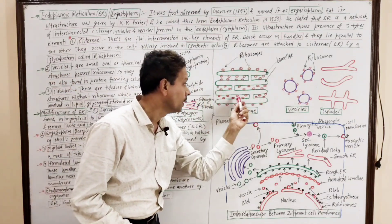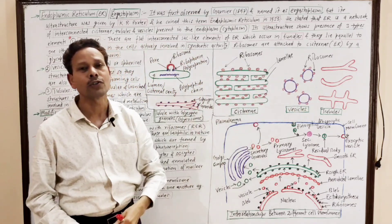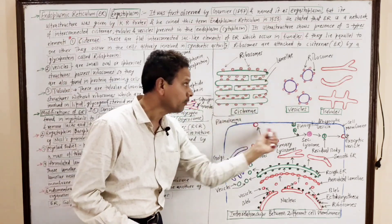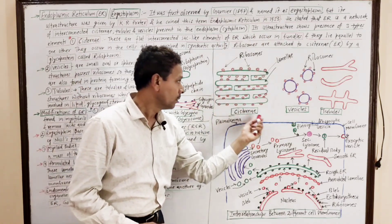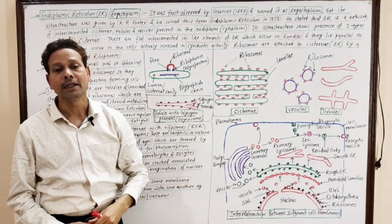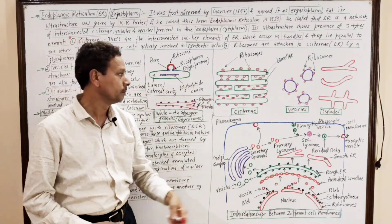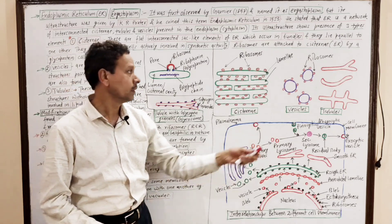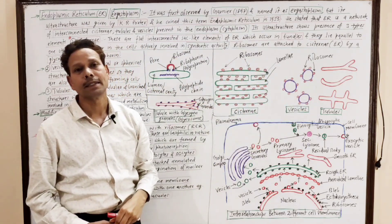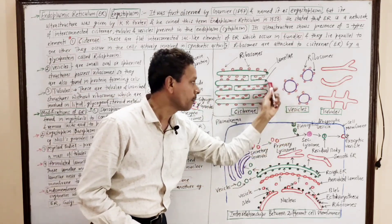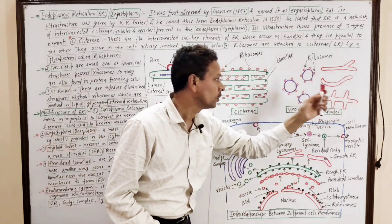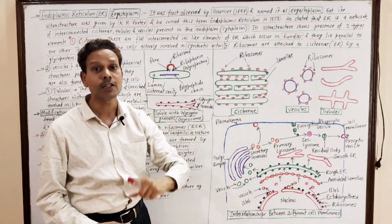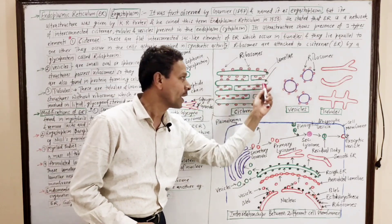That interconnected network of cisterna, vesicles, and tubules collectively constitute the endoplasmic reticulum — a network of this membrane-bound cell organelle inside the cell cytoplasm near the nucleus. The endoplasmic reticulum has three components: one is cisterna, the second part is vesicles, and the third part is tubules.